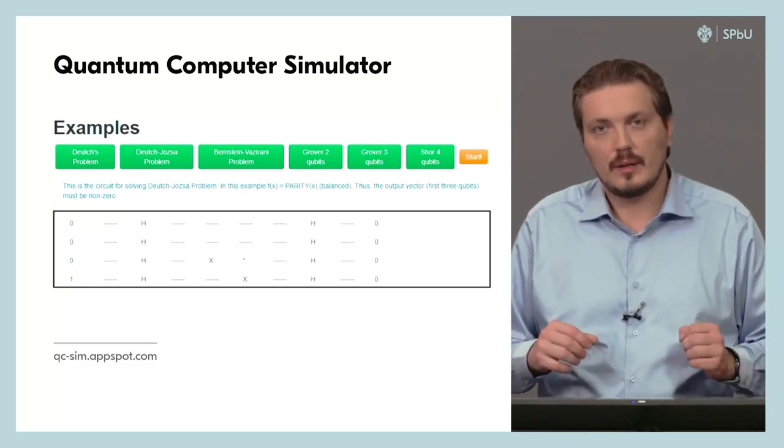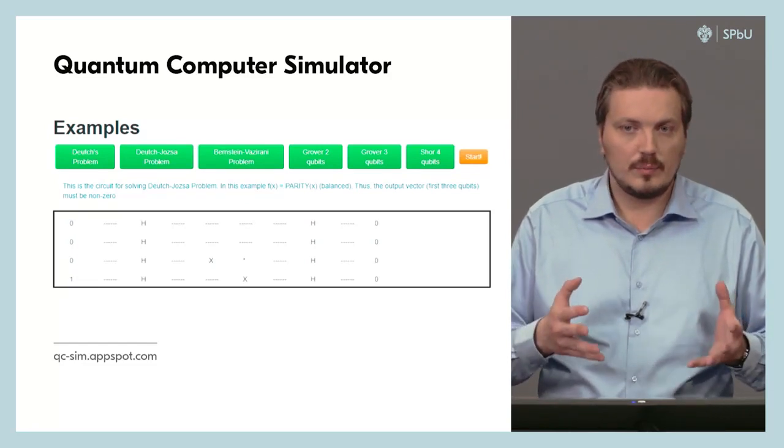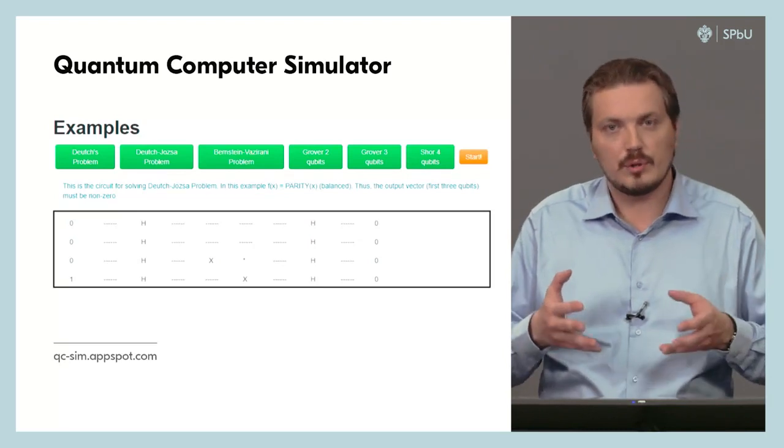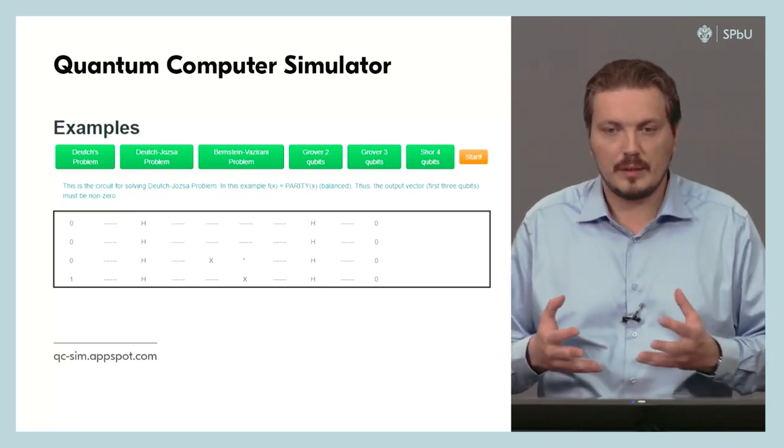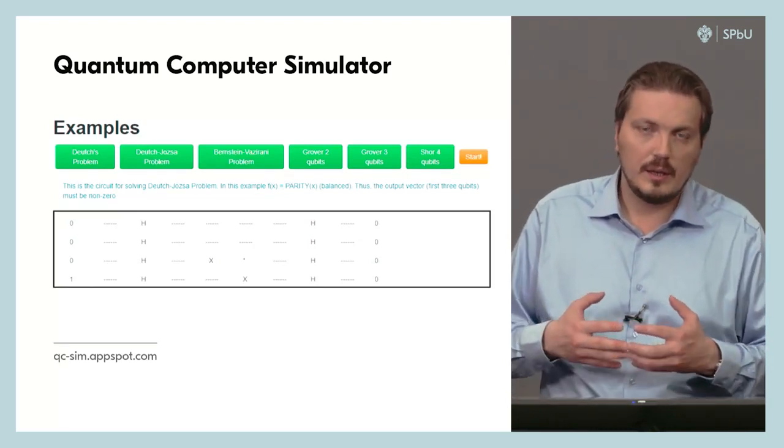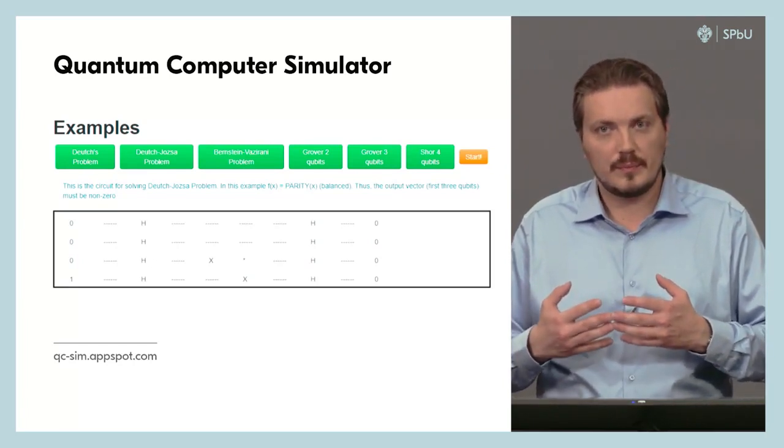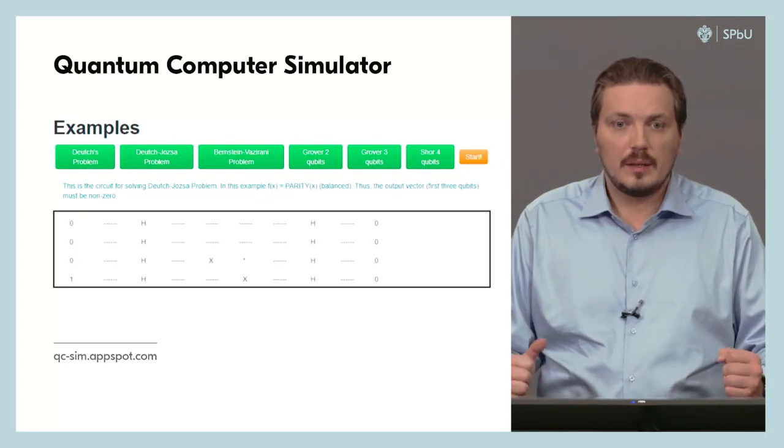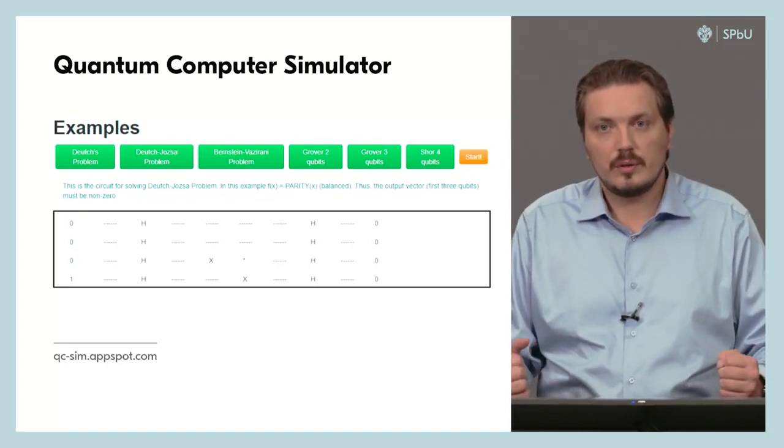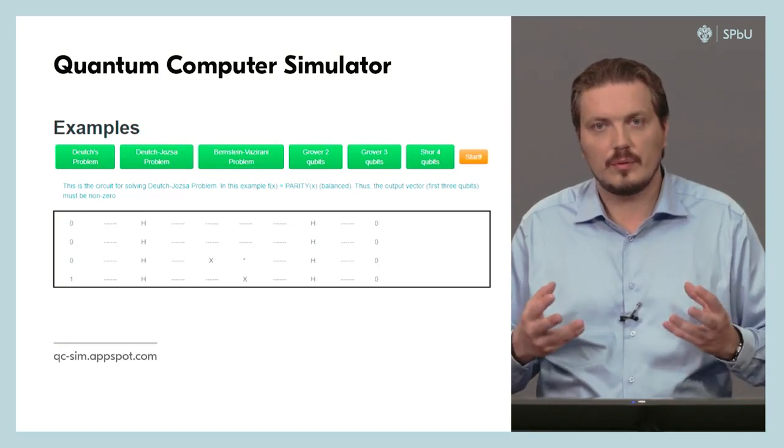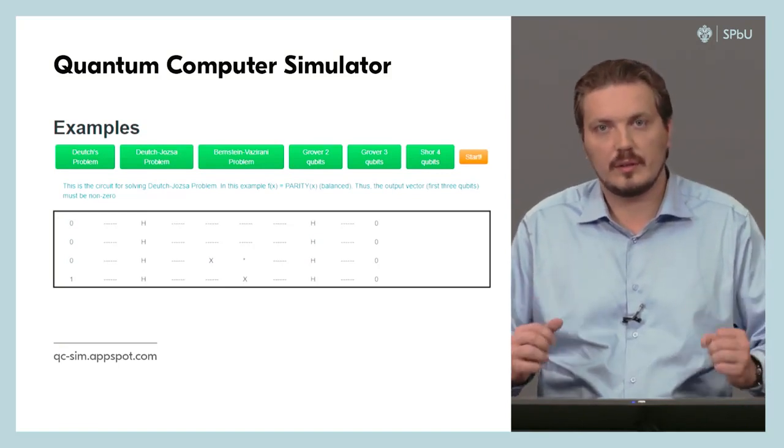Second, these algorithms employ entanglement, which is really impossible to implement in the classical systems and hard to implement in quantum systems. But this entanglement is very important for obtaining some function properties later after measurement.